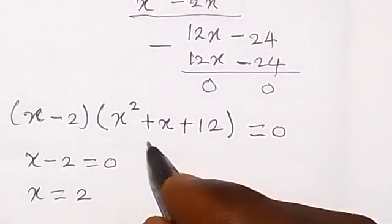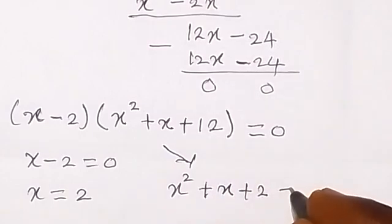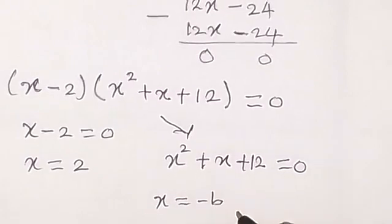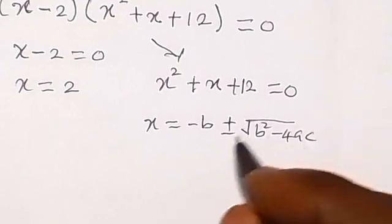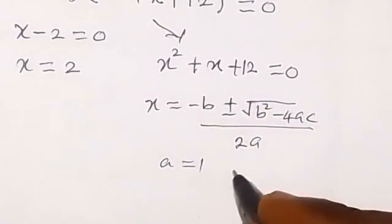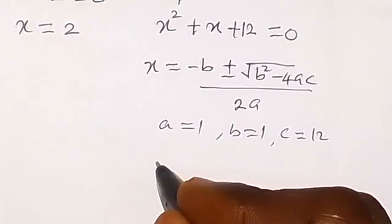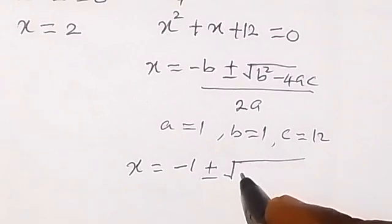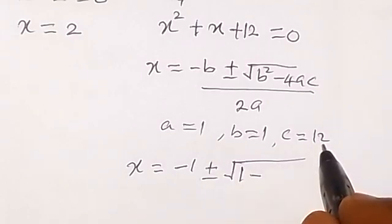Now let's get the remaining values of x from the quadratic. We have x squared plus x plus 12 equals zero. Using the quadratic formula, x equals minus b plus or minus square root of b squared minus 4ac, all over 2a. Here a equals 1, b equals 1, and c equals 12. Substituting: x equals minus 1 plus or minus square root of 1 squared minus 4 times 1 times 12, which is 1 minus 48, giving minus 47, then all divided by 2.